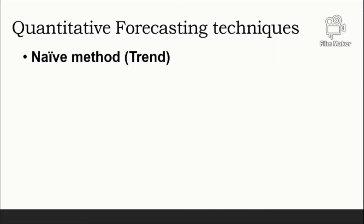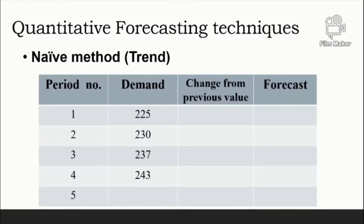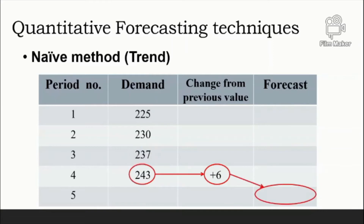For data with trend, the forecast equals the last value of the series plus or minus the difference between the last two values of the series. For example, suppose the last two values were 237 and 243. The difference is 6, so the next forecast would be 243 plus 6, which equals 249.